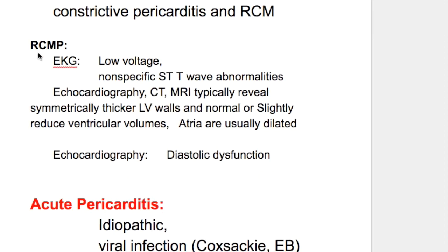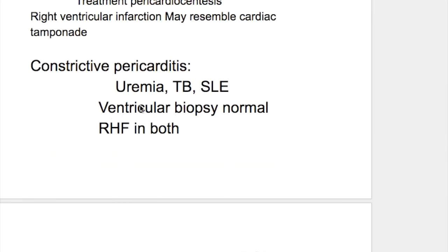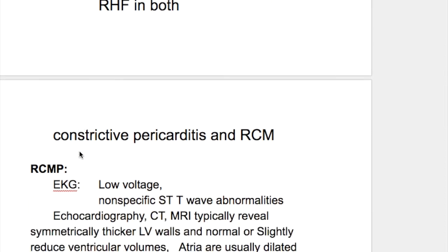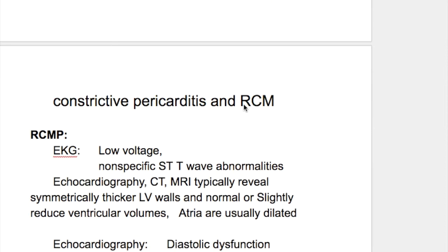The EKG in restrictive cardiomyopathy shows low voltage QRS complexes and non-specific ST-T wave abnormalities. Echocardiography, CT, and MRI typically reveal symmetrically thickened left ventricular walls and normal or slightly reduced ventricular volumes. The atria are usually dilated, and echocardiography shows diastolic dysfunction. Ventricular biopsy is normal in constrictive pericarditis.